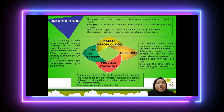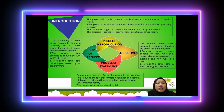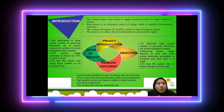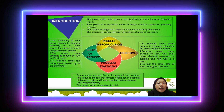The scope of the project: one, fabricating a solar power system to generate electricity as a power source for Arduino in the smart fertigation blink system; two, the power usage is estimated to reduce by 10% to 30% in total; three, to test the power rate using the blade system by IoT programming.